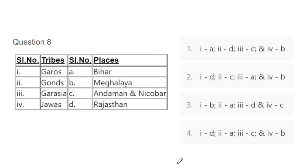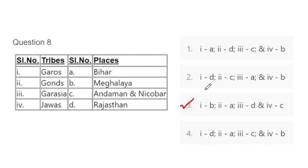Question 8: Some tribes and their locations are given — match them. Tribal society is a very large part of Indian Society, so such questions can be asked. Garo – Meghalaya, Gonds – Bihar, Garasia – Rajasthan, Jarawas – Andaman Nicobar. The correct answer is C. I will share an important tribes list on Telegram, because many tribes exist but only those asked in sociology exams or researched by important sociologists are important for you.